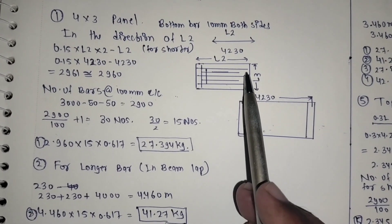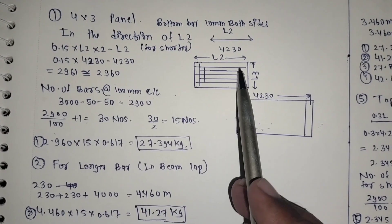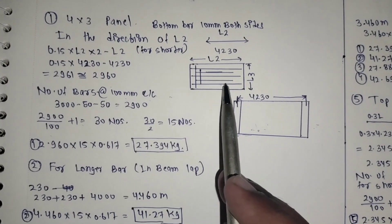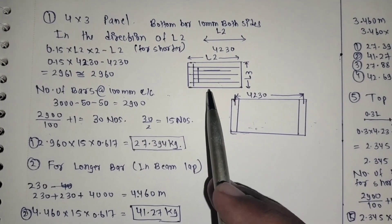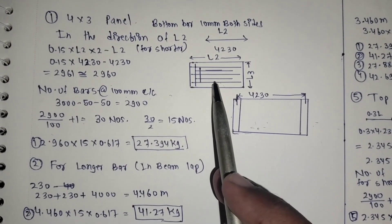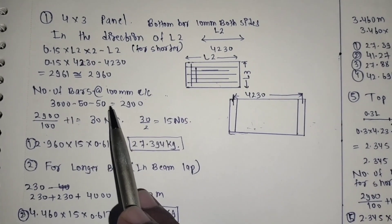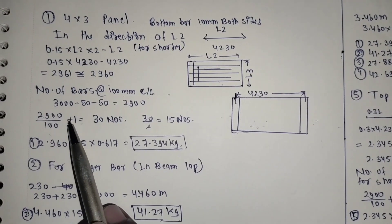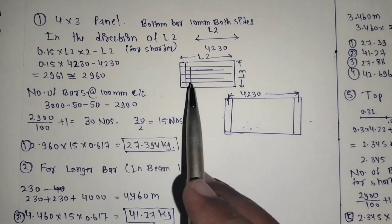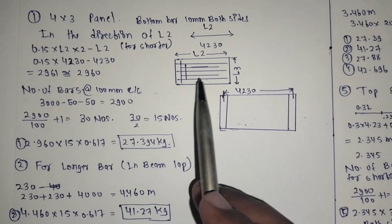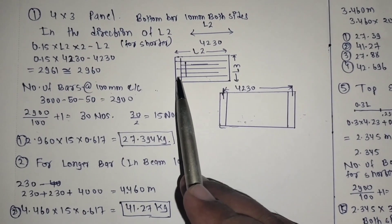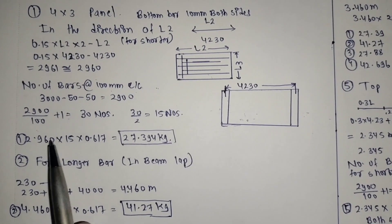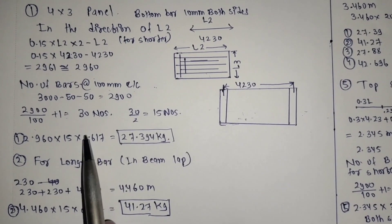For this length: 3 meters minus clear cover on both sides of the slab — 50 mm each side — gives 2.9 meters. Divided by 0.1 plus 1, you get 30 numbers. But 30 numbers are not provided because both are in alternate arrangement, so divide by 2 to get 15 numbers. So 2.960 into 15.